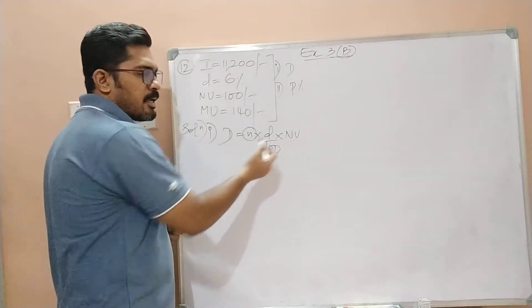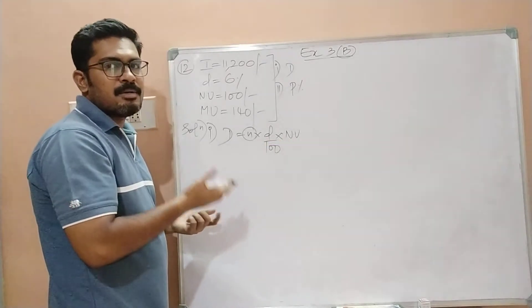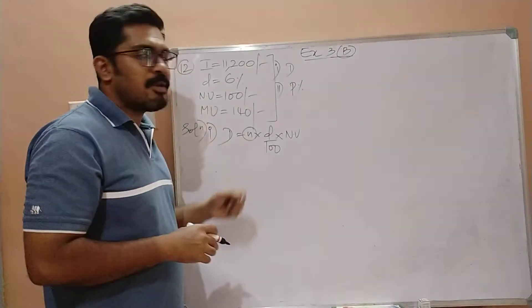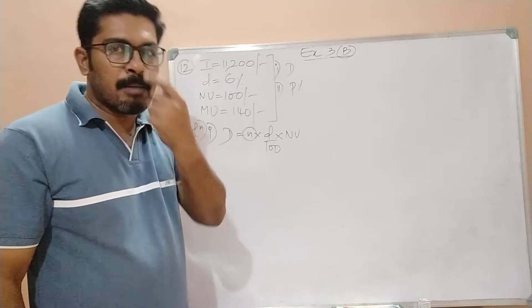Otherwise, small D and NV, they both are given to us. So our first responsibility is to find what is the value of N, or the number of shares that he bought from this company.